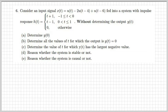Let's move on to the next exercise. In this case, we have to consider a certain input signal given by the sum of three step functions. This is fed into a system that has a certain impulse response h(t) represented here. Without determining the full output y(t), we should be able to determine the value of y(0), meaning the value of the output for t equals 0, using our knowledge and understanding of signals and systems.